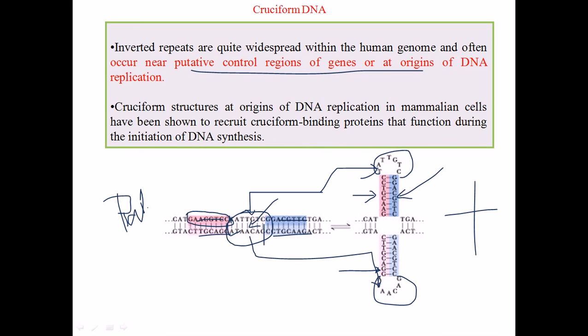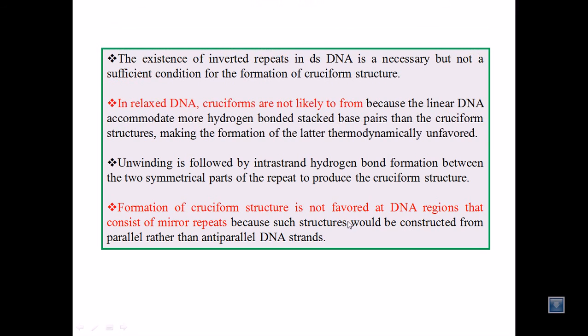Now here are some interesting facts about the cruciform DNA. The existence of inverted repeats of this double-stranded DNA is necessary, but it is not a sufficient condition to form this cruciform. There are other conditions to be maintained: the presence of this palindromic sequence is very important, and those palindromic sequences have to be separated by some stretches of the nucleotides.